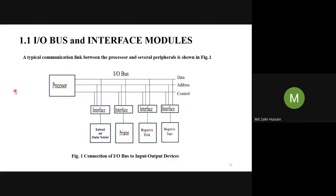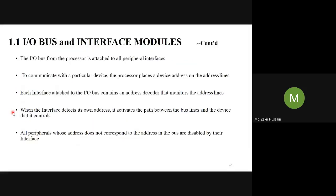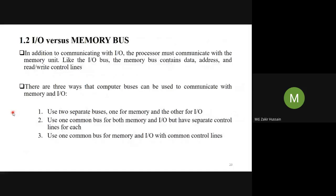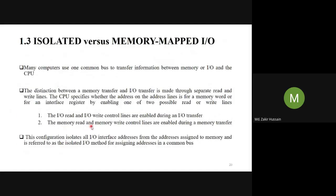If it is not I/O read or I/O write but rather memory read or memory write, then it goes to the memory side. The memory read and memory write control lines are enabled during memory transfer. We are simply playing with the control lines: if we want to transfer anything to the I/O, we enable I/O read or I/O write; if we want to send anything to memory, we enable memory read or memory write. This mechanism uses a common bus but with two separate control lines — and we call this the isolated mechanism.